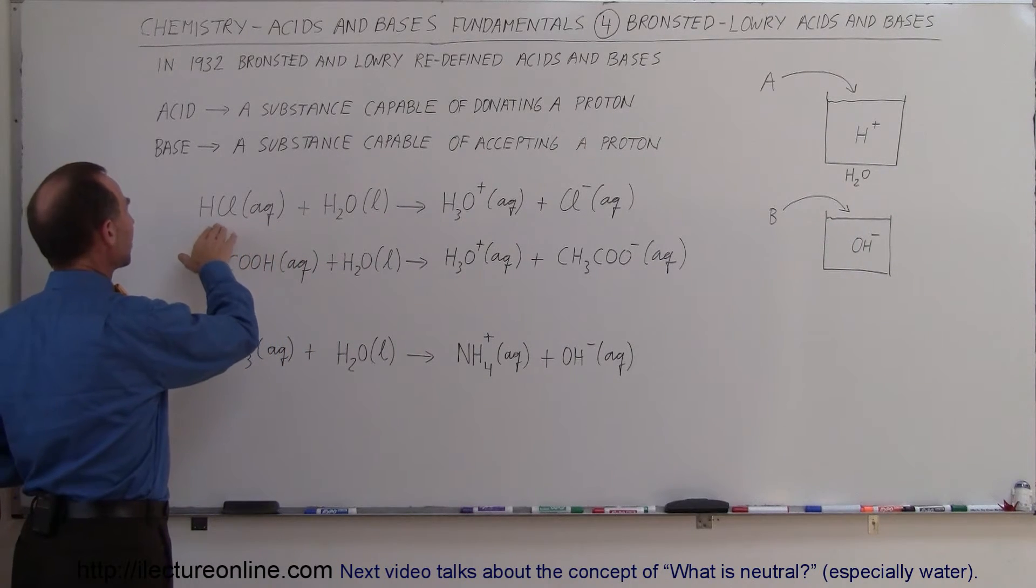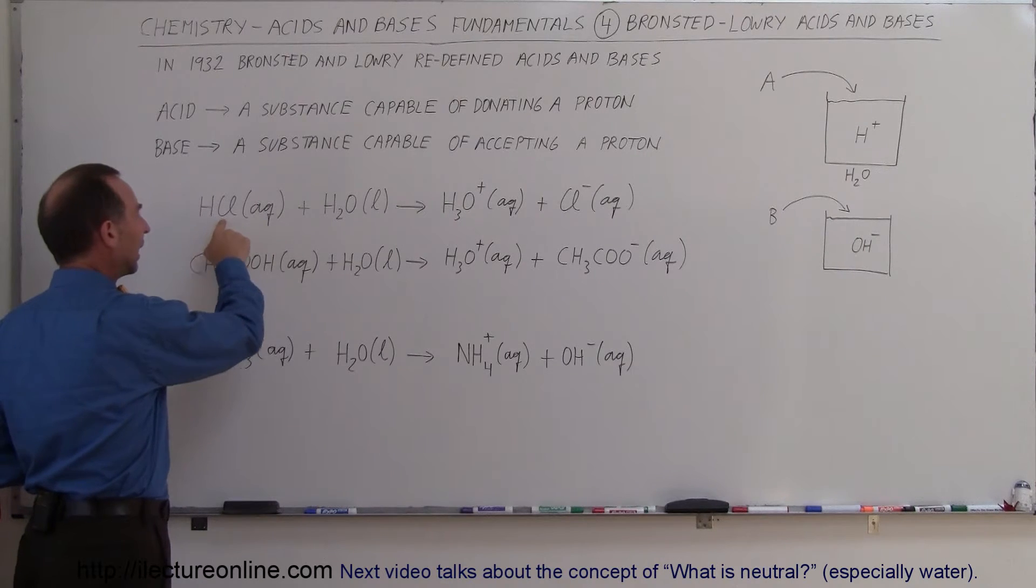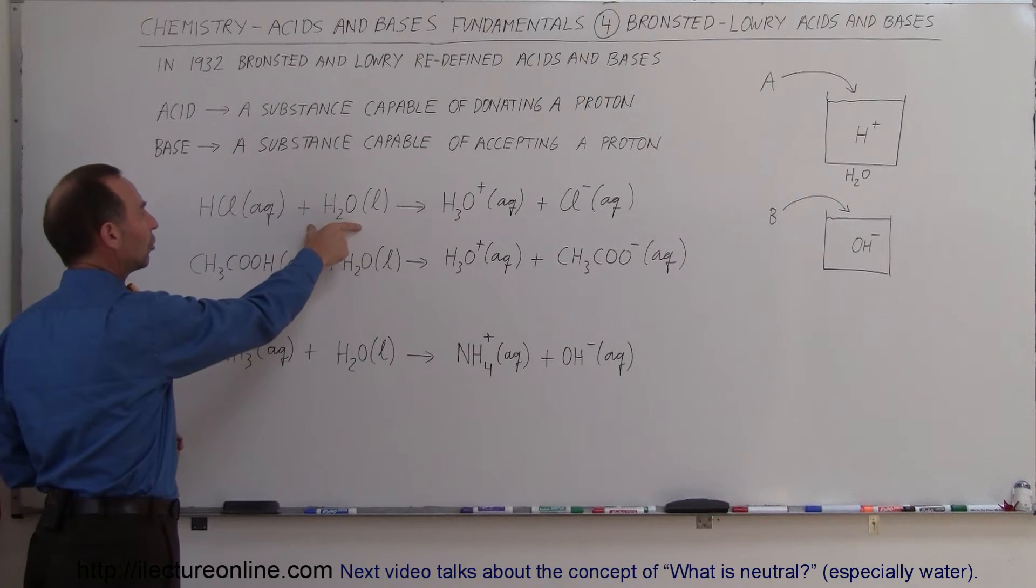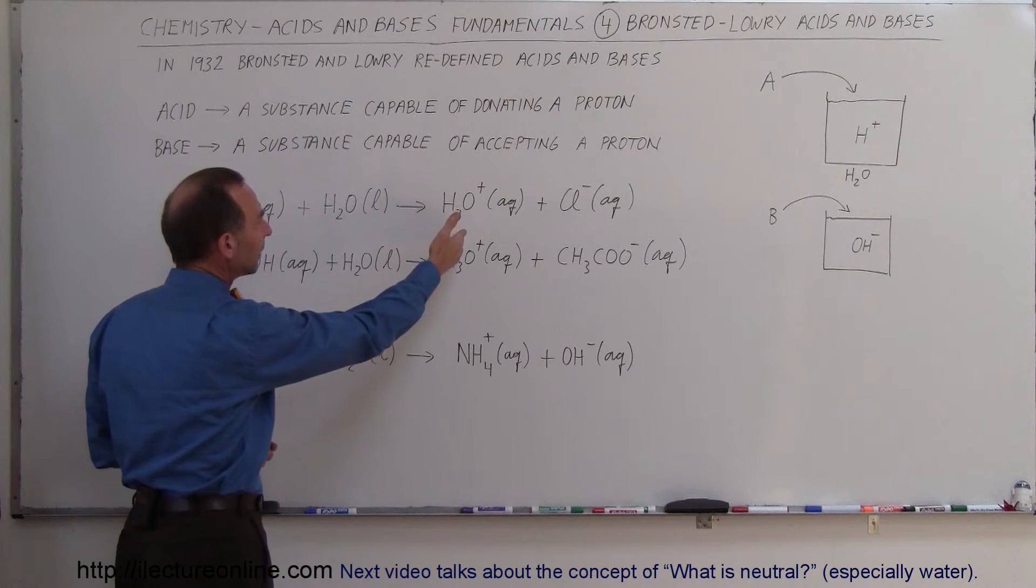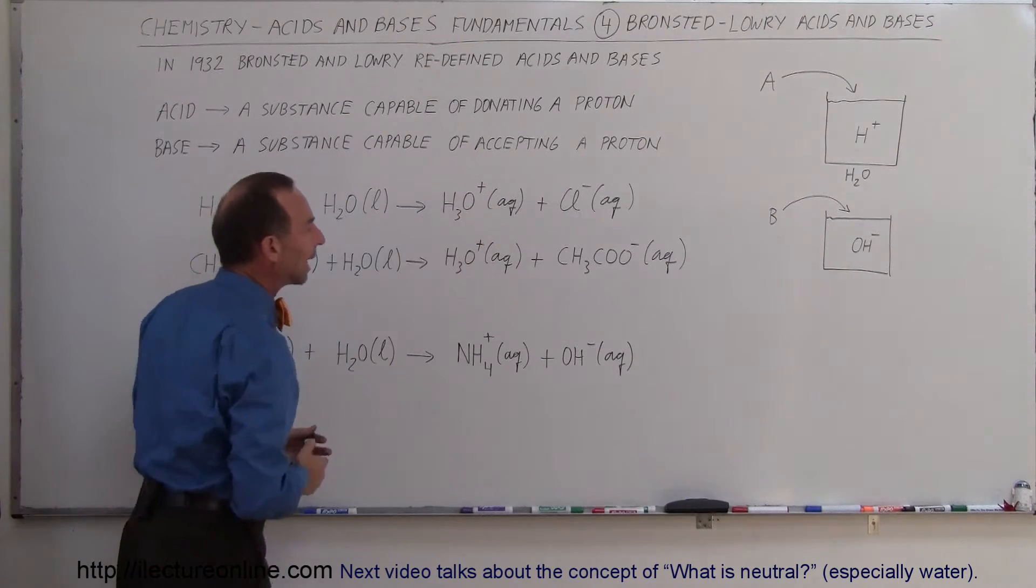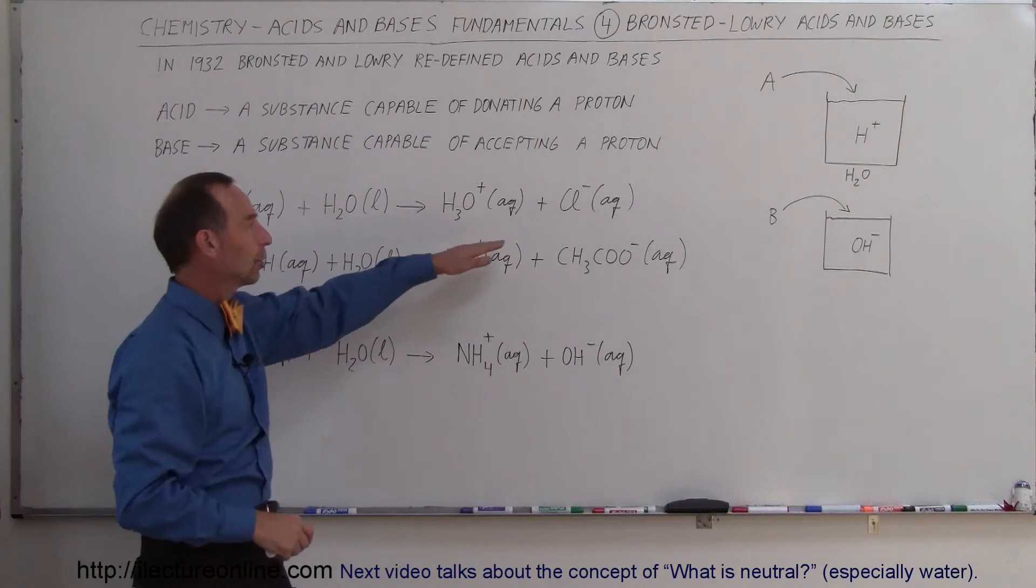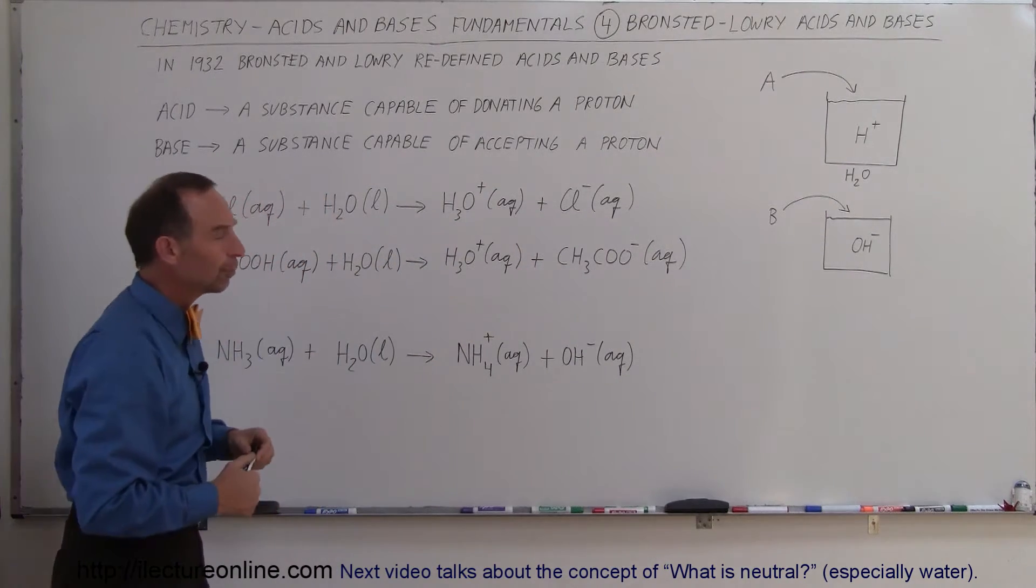What we're saying here is that we have hydrochloric acid mixed with water in aqueous solution, so the HCl donates a hydrogen ion, and therefore we end up with the hydronium ion H3O+ and the chloride ion Cl- in aqueous solution.